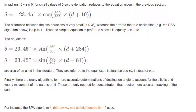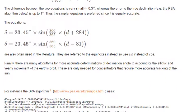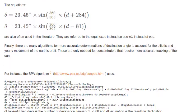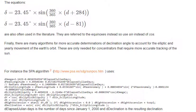The difference between the two equations is very small, less than 0.3 degrees, whereas the error to the true declination, e.g. the PSA algorithm below, is up to 1 degree. Thus the simpler equation is preferred since it is equally accurate.